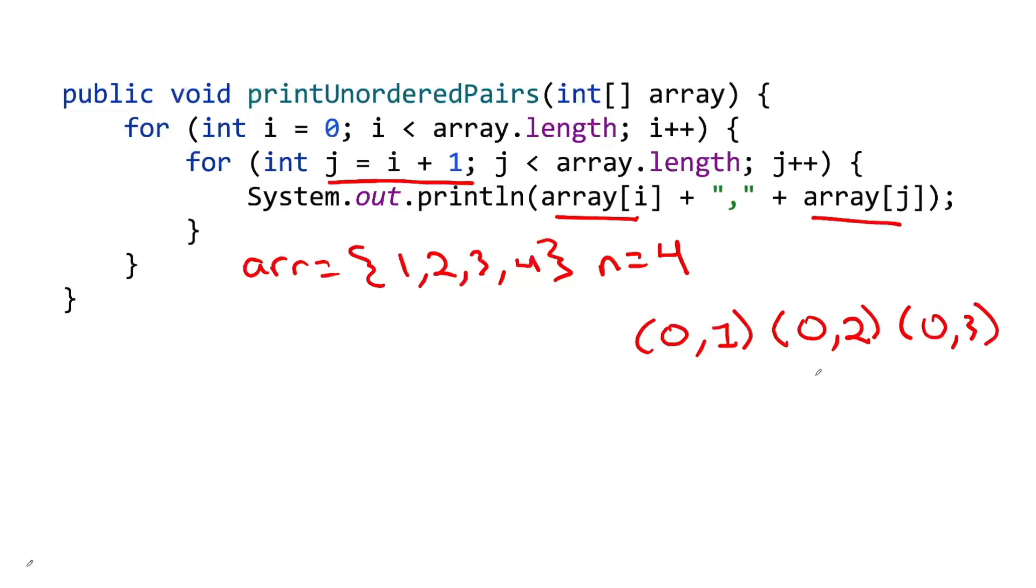Well, we increment j again. j goes from 3 to 4. 4 is not less than 4, so we're done here. We go from the inner loop back to the outer loop. We increment i, so now i is 1. Now, on the inner loop, j is equal to i plus 1, or 1 plus 1. So j is equal to 2 on the first time through. So i is 1, j is 2. We increment j. j goes from 2 to 3. 3 is still less than 4. So now we have 1, 3.